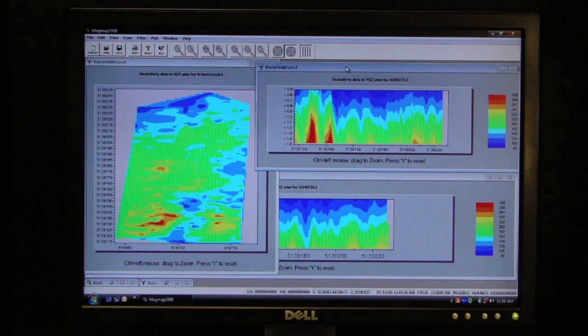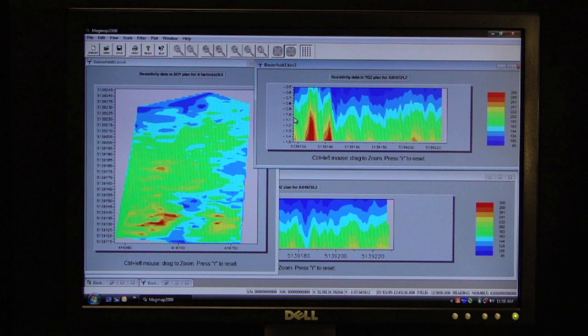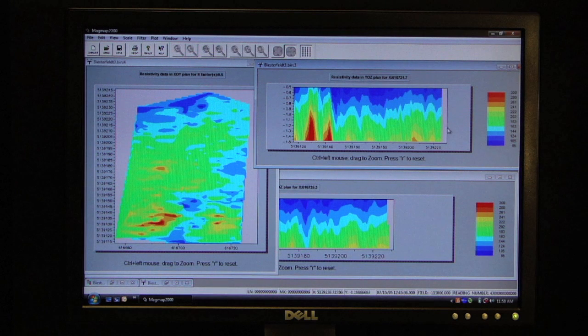The change in resistivity with depth indicates a clear change in geologic structure. We have probably a high clay content material at the surface, changing from grading from high clay into more sandy material.